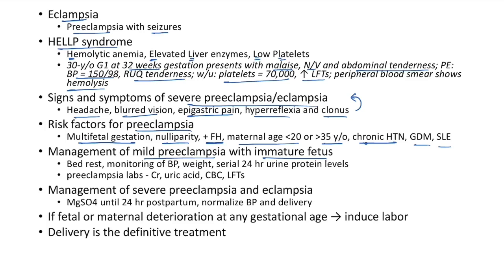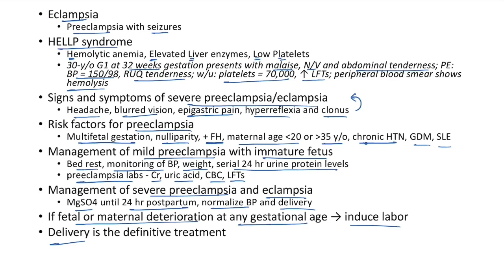Management of mild preeclampsia without severe features: advise bed rest, monitor BP and weight, and serial 24-hour urine protein levels. Order preeclampsia labs including creatinine, uric acid, complete blood count, and liver function tests. For severe preeclampsia and eclampsia: give magnesium sulfate until 24 hours postpartum, normalize BP, and proceed to delivery if fetal or maternal deterioration is seen at any gestational age, as delivery is the definitive treatment.